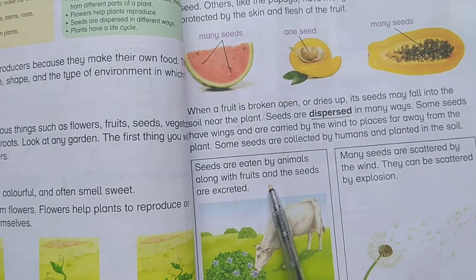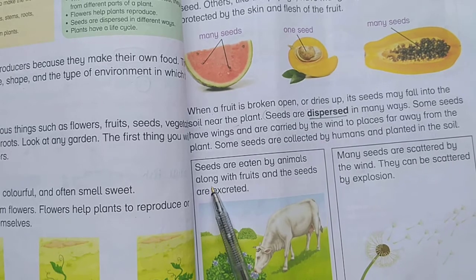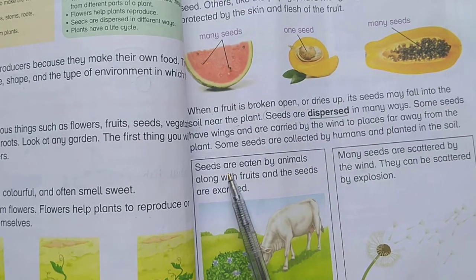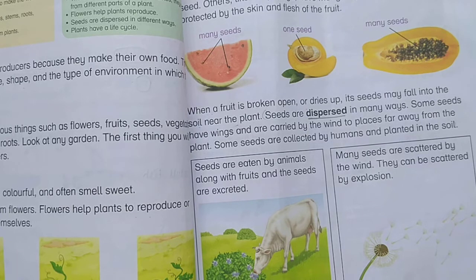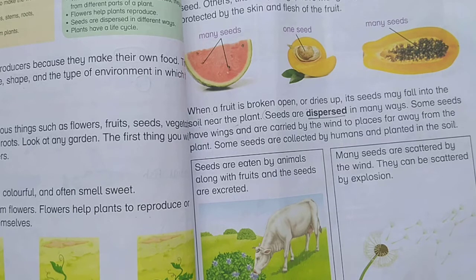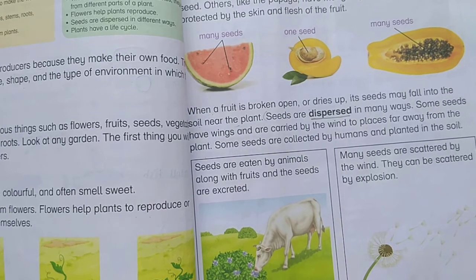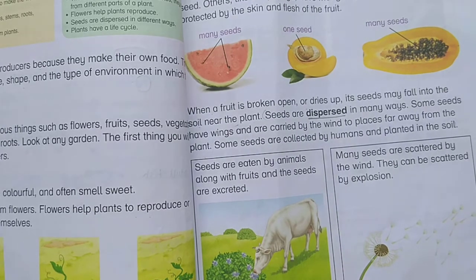Seeds can also be eaten by animals along with fruits, and then excreted. When the seeds are excreted, they land in the soil and can grow into new plants.